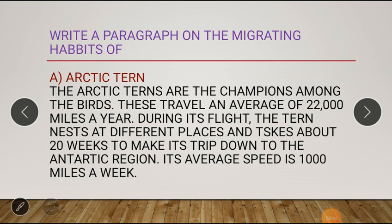Next, in the writing section: write a paragraph on the migrating habits of the Arctic tern, American golden plover, and swallows of California. For the Arctic tern: the Arctic terns are the champions among the birds. They travel an average of 22,000 miles a year. During its flight, the tern nests at different places and takes about 20 weeks to make its trip down to the Antarctic region. Its average speed is 1,000 miles a week. The full answer is in page number 45, first paragraph.